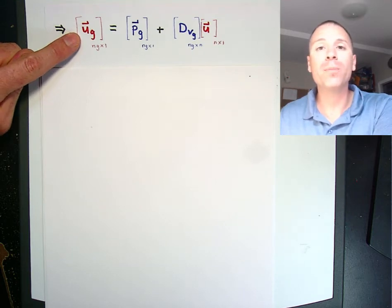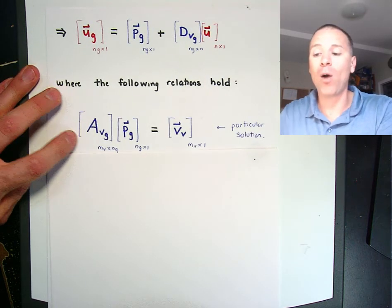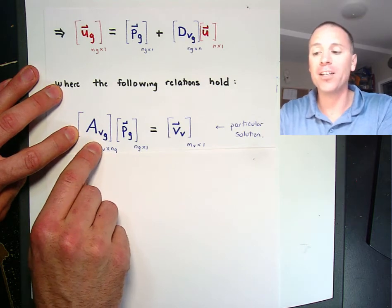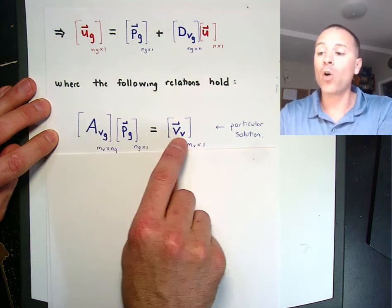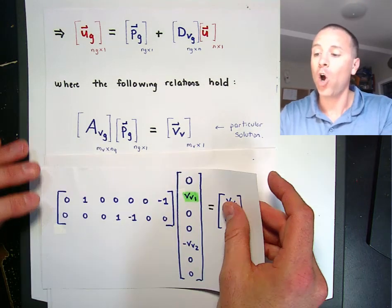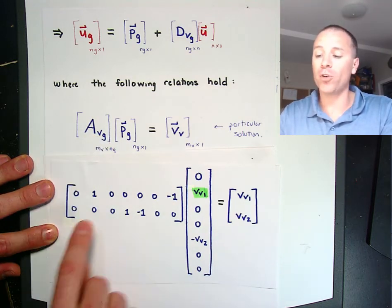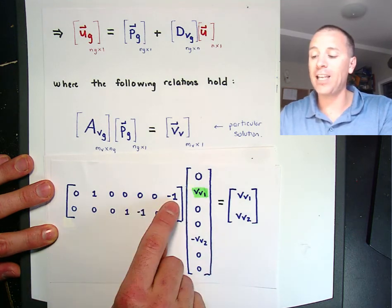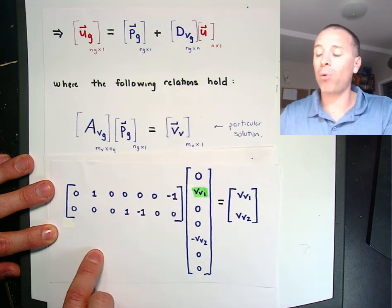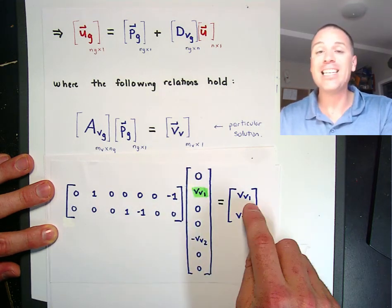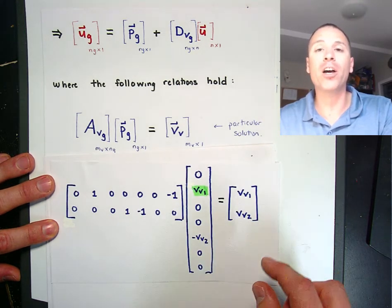Using that information we write the vector u sub g as a particular solution plus something that gets sent to zero by the matrix a sub vg — the voltage source sub-block of the entire incidence matrix. The particular solution solves the original general linear systems problem involving that sub-block. The voltage source sub-block of the entire incidence matrix takes this form because nodes 2 and 7 are connected by voltage source 1, and nodes 4 and 5 are connected by voltage source 2 in that polarity. Indeed that matrix times this vector solves our original problem.